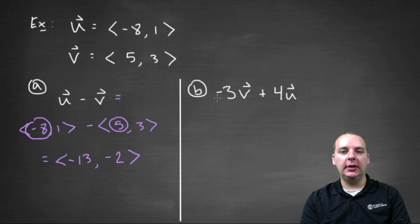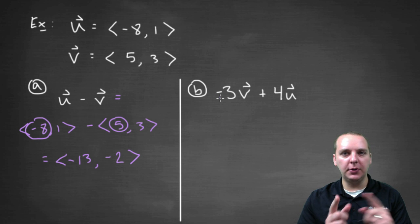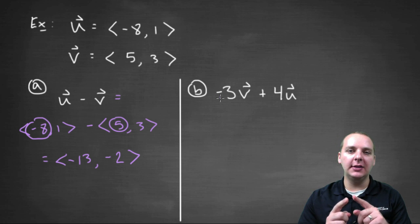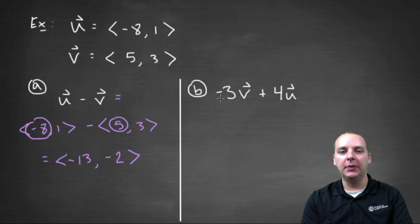And last one, here we have a little bit of both which is pretty common. We have scalar multiplication and addition. So we have negative three times v plus four times u. So let me find these two over here on scratch paper real quick.